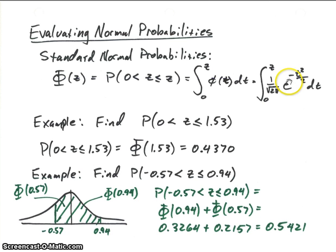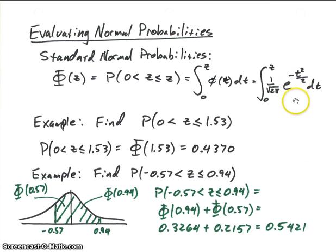So we plug in our limits from 0 to z, and our density function for our standard normal random variable is 1 over the square root of 2π, e raised to the minus t squared over 2. Since we're integrating with respect to t, we have t squared over 2 in the exponent. Now, we cannot evaluate this function in a closed form solution — we can't solve this integral. So we have to solve it numerically and find values for the standard normal probability. We'll look at the standard normal random variable probabilities and then see how we can use those tables to find the probability of general normal random variables.